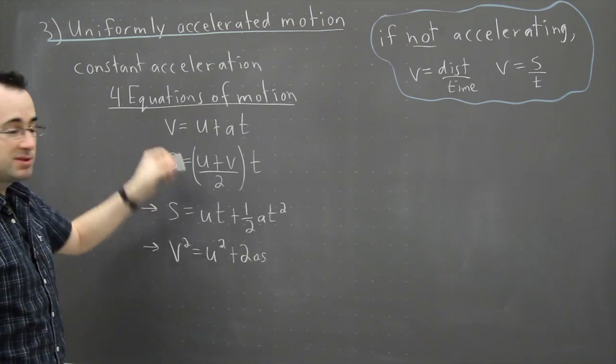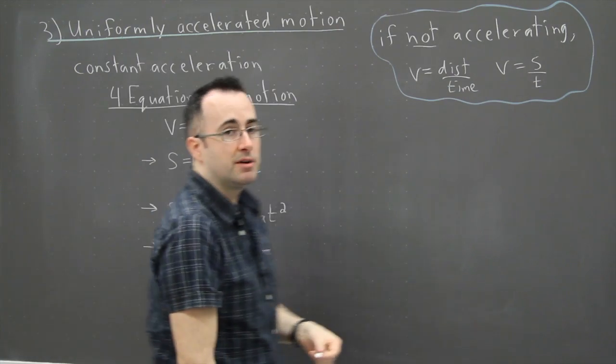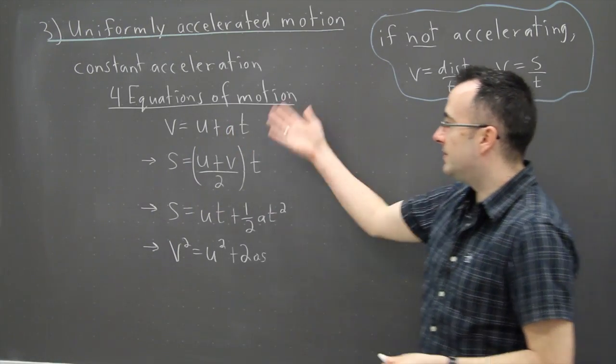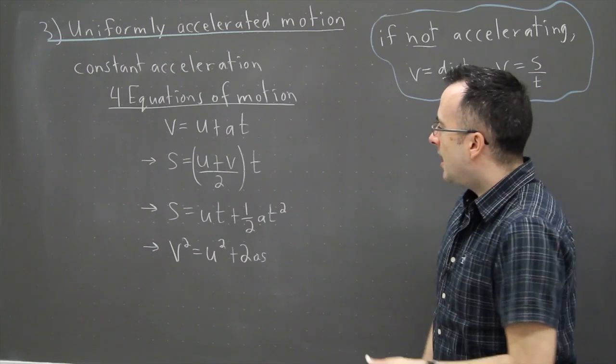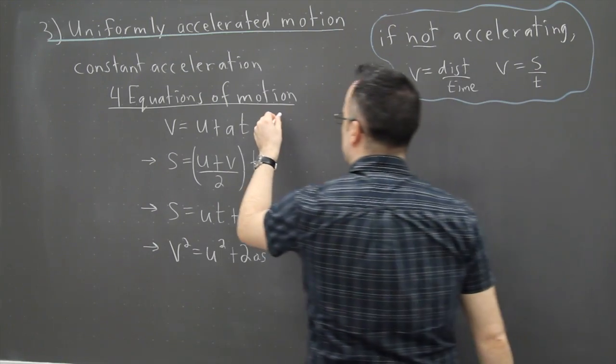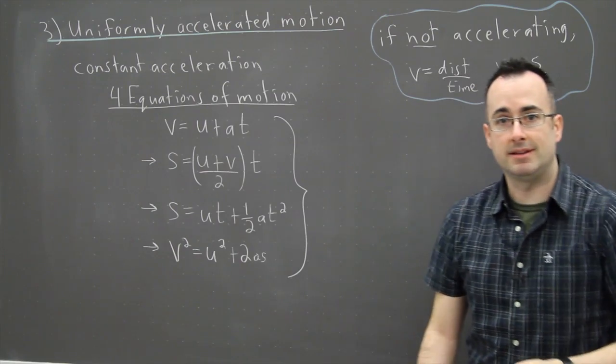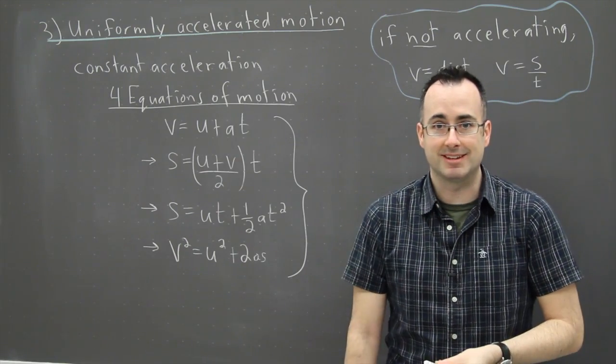These three right here. This one is just worth remembering because, well, first of all, there's not so much to it. Just V equals U plus AT. I think though it would help to actually write down what each of these letters means. Because without that, it doesn't really tell us much.